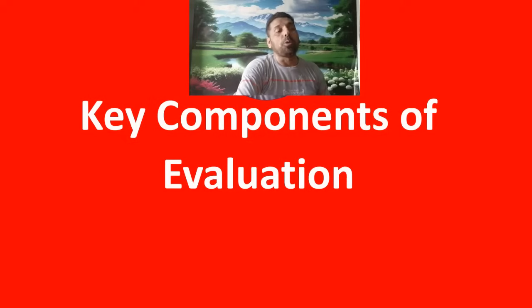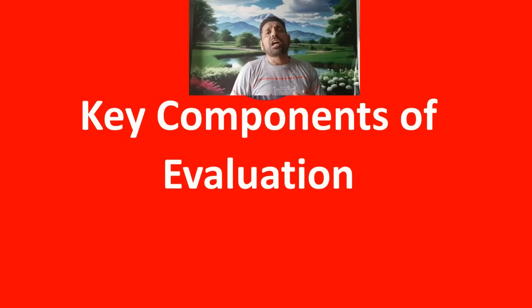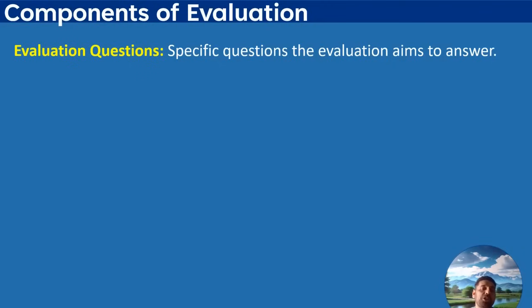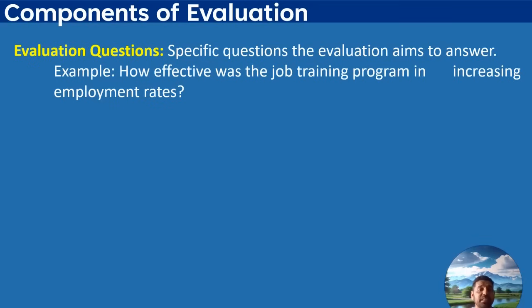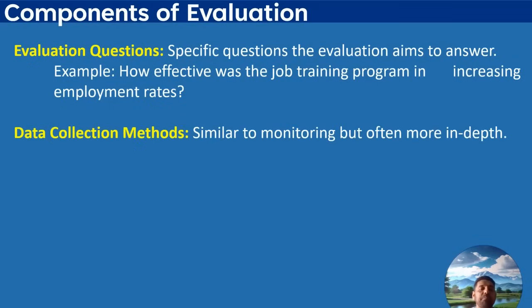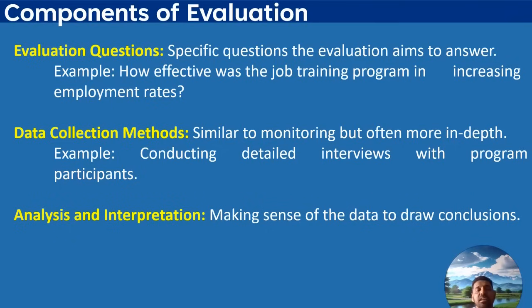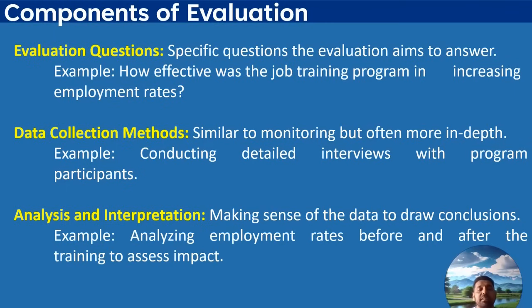The components of evaluation focus on evaluation questions, data collection methods, and analysis and interpretation. Evaluation questions are specific questions the evaluation aims to answer, for example: how effective was the job training program? Data collection methods are similar to monitoring but often more in-depth, such as conducting detailed interviews with program participants. Analysis and interpretation involves making sense of the data to draw conclusions, for example analyzing employment rates before and after the training to assess impact.